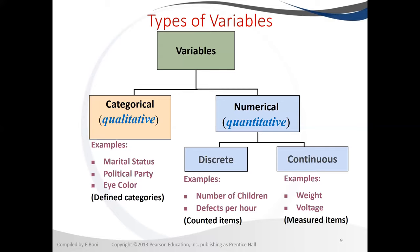What are the variables? Variables are just characteristics that describe the population or the sample. There can be two types of those variables. They can be a categorical variable, which means variables that you can put into categories. We also call them qualitative variables because of how we describe them.